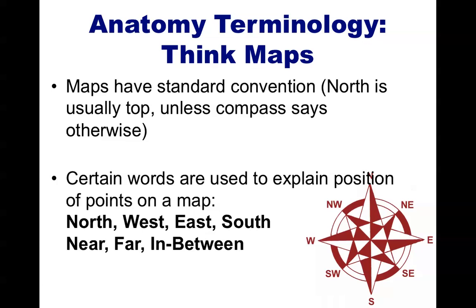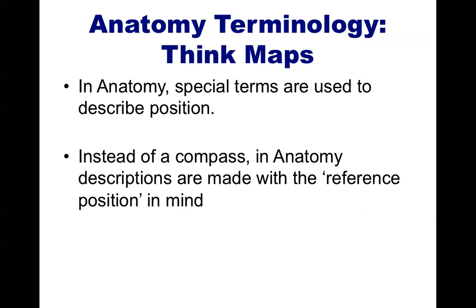These terms have specific meaning, and if you give somebody directions using words like north, west, near, far, in between, and hand them a map, they could probably find where they're going. Anatomy, in some ways, is like a map of the human body, but we're going to use a different set of terms to describe the position.